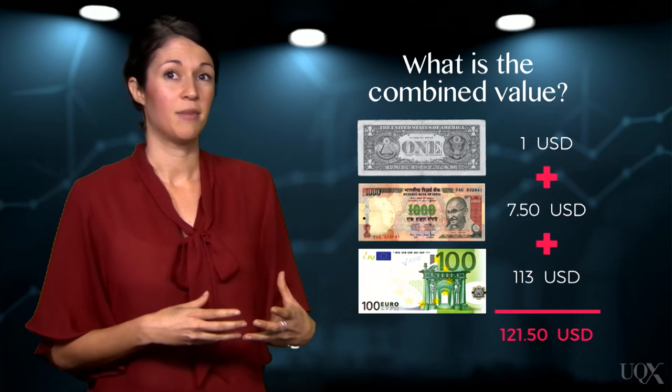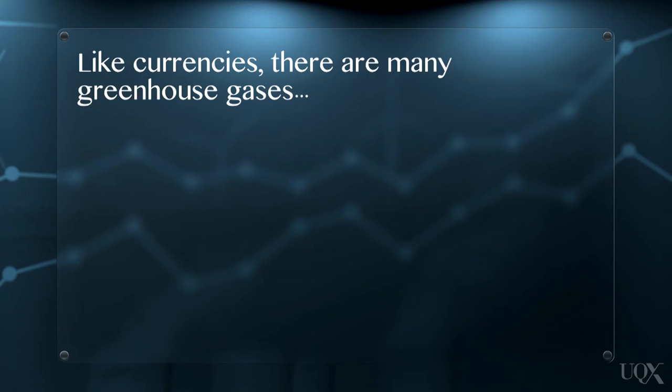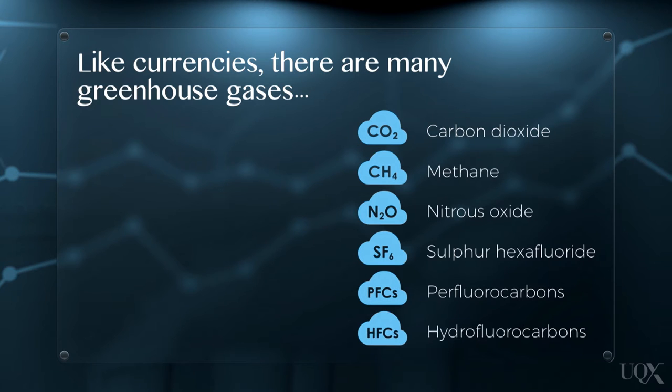This same idea applies to greenhouse gases. There are many gases that have a global warming impact, including carbon dioxide, methane, nitrous oxide, sulfur hexafluoride, perfluorocarbons, and hydrofluorocarbons. These are emitted by both natural and anthropogenic sources.